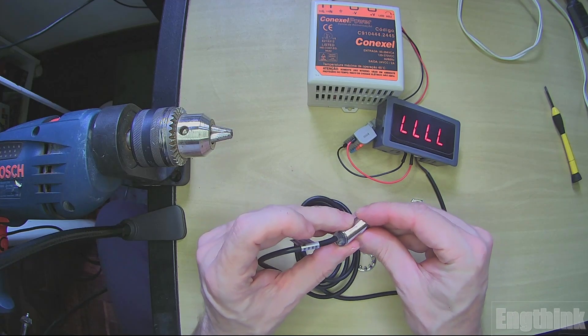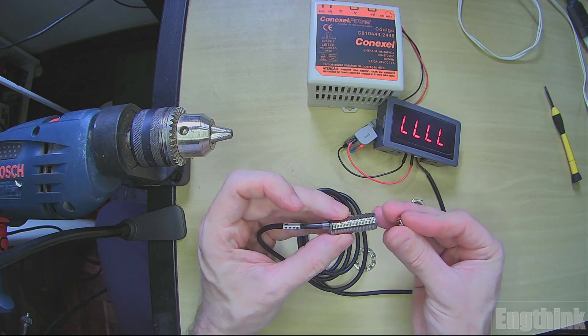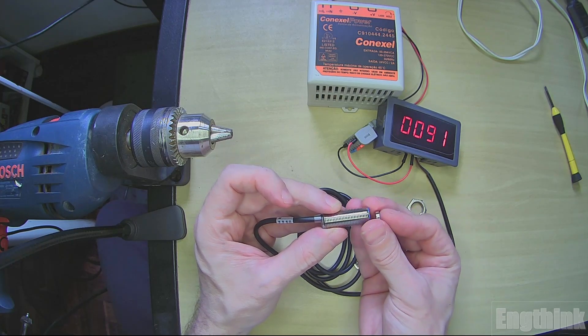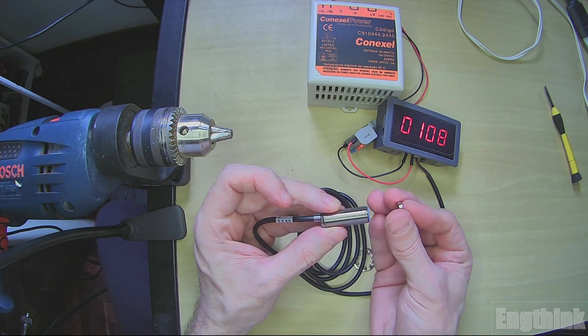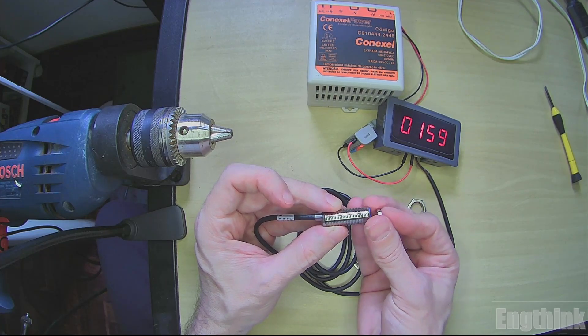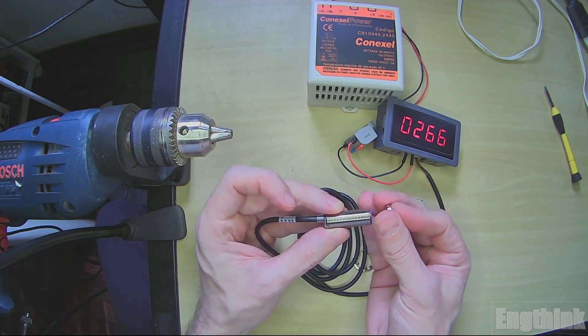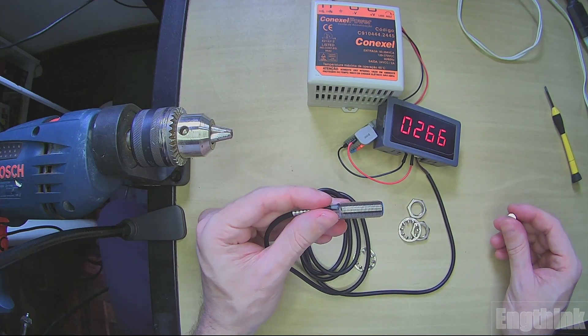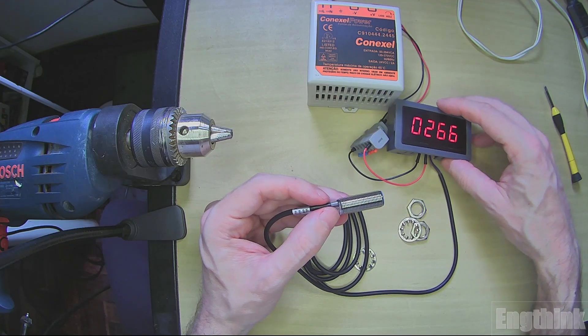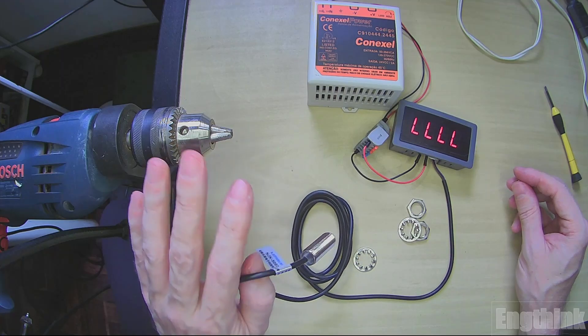However, if we have detection at the sensor we can see that we have an indication of the RPM. Depending on the frequency of the detection we will have more indication regarding the speed. Now let's try to make the connection with the drilling machine.